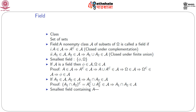If script A is a field, then φ and ω always belong to script A — these are the two elements which will always be there. Since A belongs to script A, A complement also belongs to script A. Their union A ∪ Aᶜ = ω belongs to script A. The complement of ω is φ, so the null set also belongs to script A.